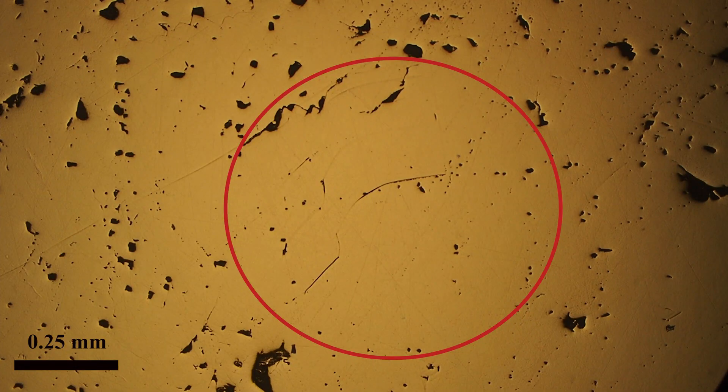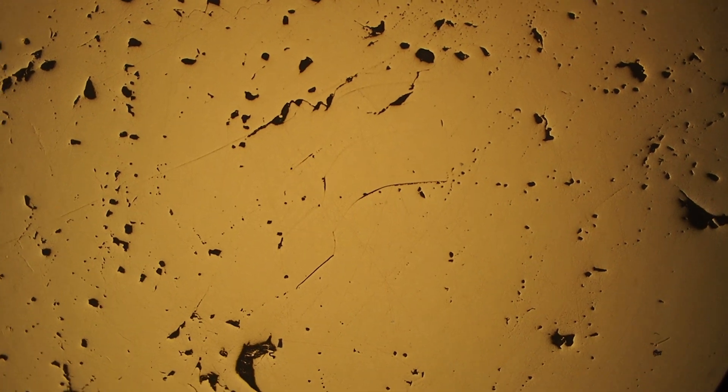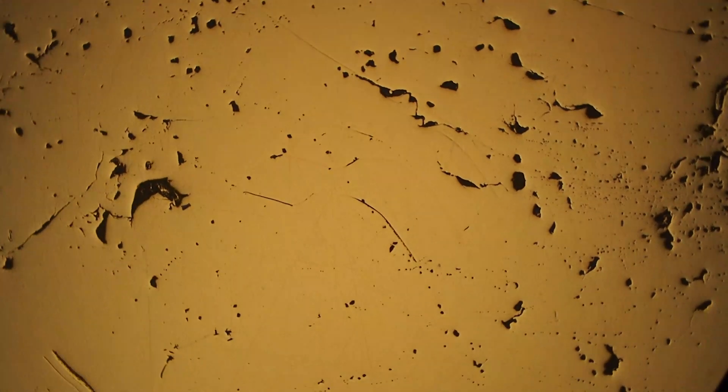All right, today we're going to talk about how to identify chalcopyrite in polished section. So this is chalcopyrite. It's quite soft and it's got this rich yellow color.